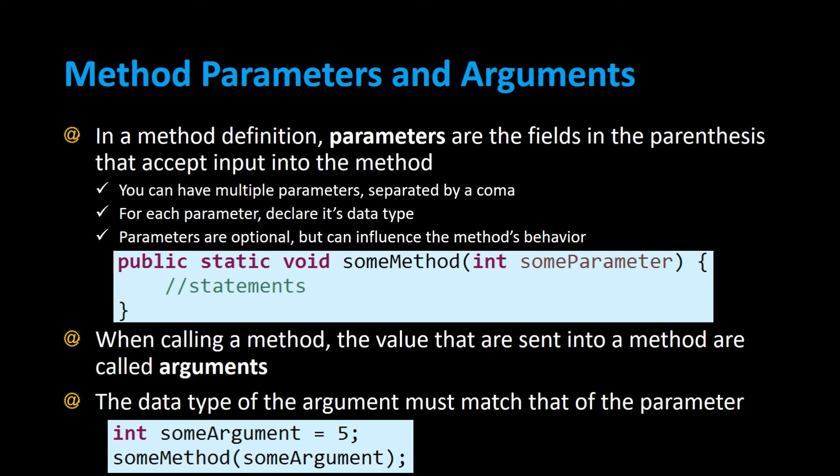For example, if we have a method called some method and we want to call that method, we can only pass integers to the parentheses because it only accepts integers as parameters.